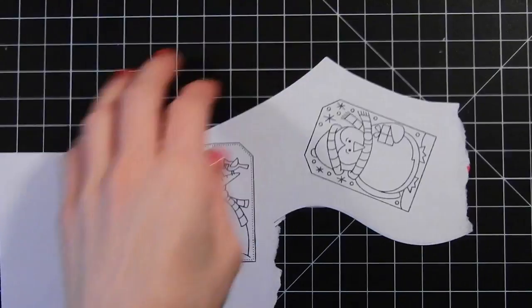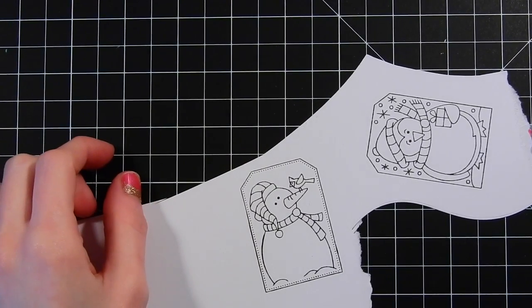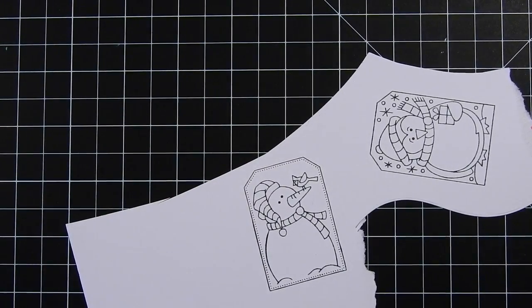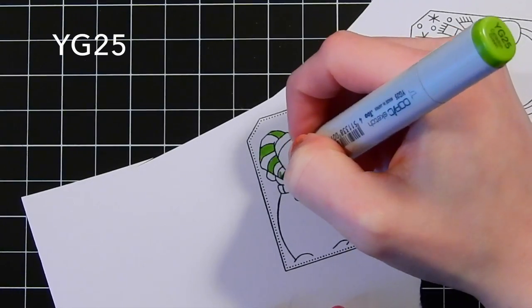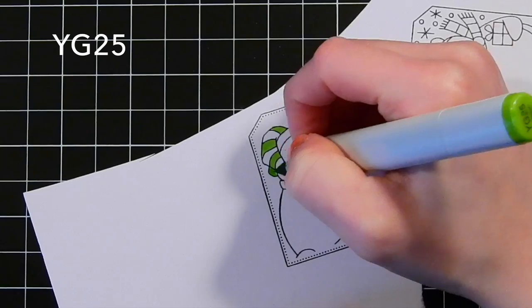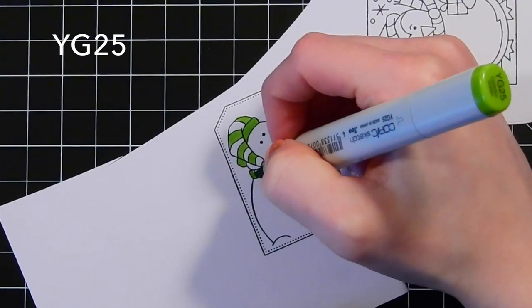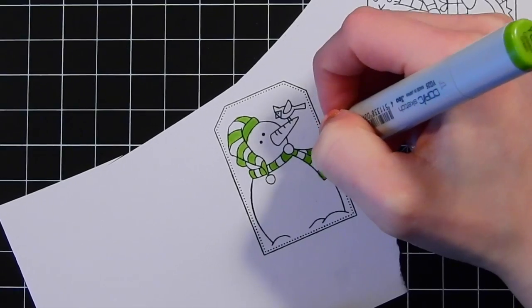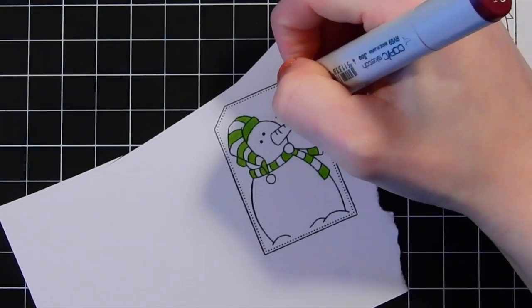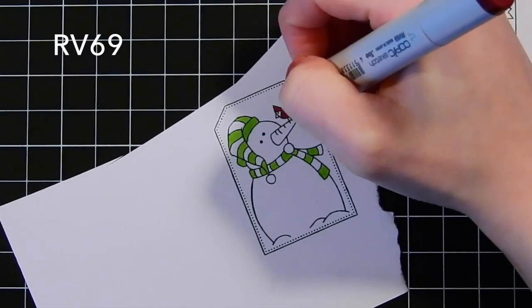Here I've got two of the tags stamped out. I'm going to be using the snowman and the penguin from the stamp set. There are also some other really cute images included in the set. I'm going to be doing some Copic coloring, so here you can see I'm adding in some greens to this little snowman. I'm doing my base color here and I've got all the colors that I'm using listed on the side of the screen.